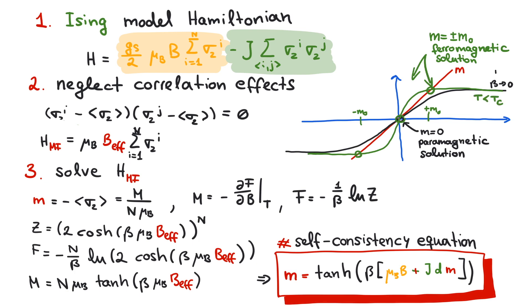Given a certain coupling J, there is a phase transition at some critical temperature, Tc, from the paramagnetic phase to the ferromagnetic phase. That's pretty much it for this video. Thanks for watching!